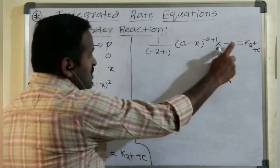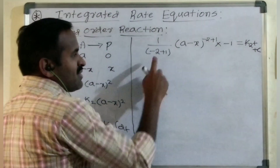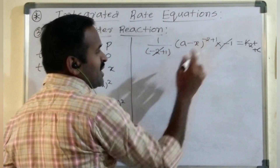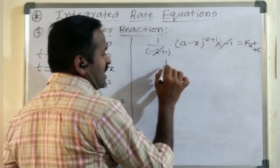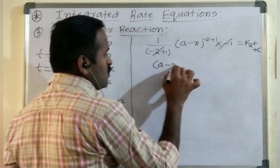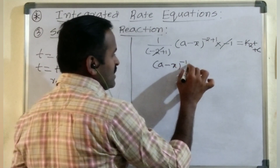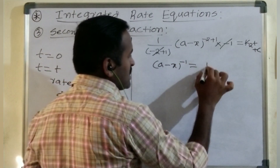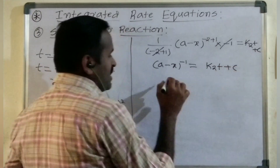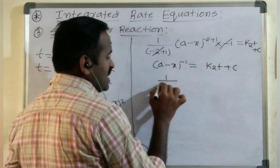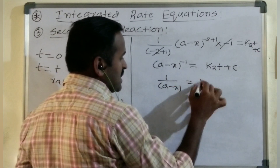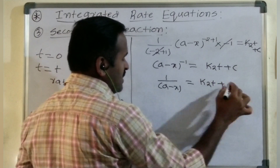The minus 1 and (minus 2 plus 1) terms cancel. We get 1/(A minus X)^(minus 1), which I can write simply as: (A minus X)^(minus 1) equals K2·T plus C, or 1/(A minus X) equals K2·T plus C.